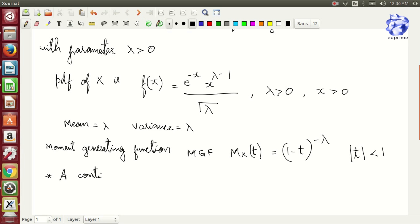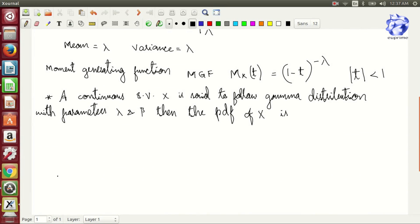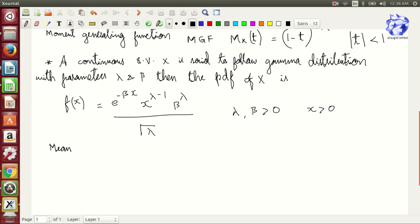A continuous random variable X is said to be following a gamma function with parameters β and λ, then the probability density function of X is f(x) equals e to the power minus βx times x to the power λ minus 1 times β to the power λ divided by square root of λ, for λ and β both greater than zero and x greater than zero.